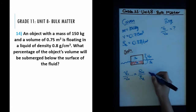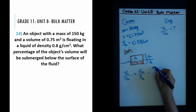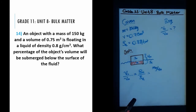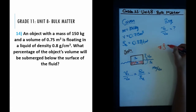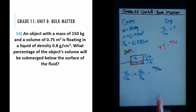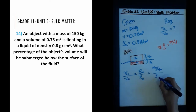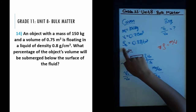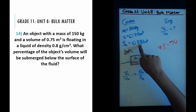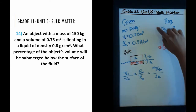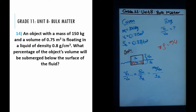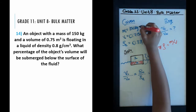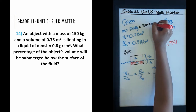Let us calculate the density of the object. Density equals mass divided by volume — that's the basic definition. So it's the mass of the object divided by the volume of the object, all over the density of the liquid. These are all quantities we were given. Before plugging in numbers, note that the density of the liquid is in grams per centimeter cubed, but mass and volume are in kg and meter cubed — we need to convert.